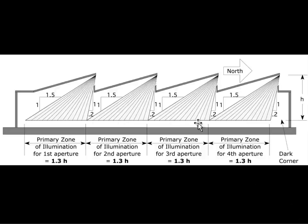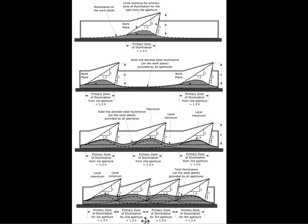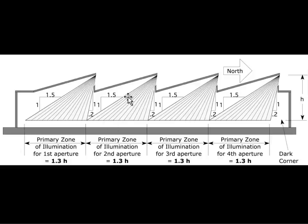This is how you construct it: you say here's a primary zone of influence from that aperture, and the next aperture needs to be placed closely enough that these triangles touch each other. These triangles don't mean anything in terms of actual illuminance - they're just a geometric construction technique. The slope is 1.5 on the horizontal to 1 on the vertical; and 1 on the vertical to 0.2 on the horizontal, so the effective width of the primary zone of illumination is 1.3 times H, where H is measured from the task surface at 30 inches up to the top of the glazing.